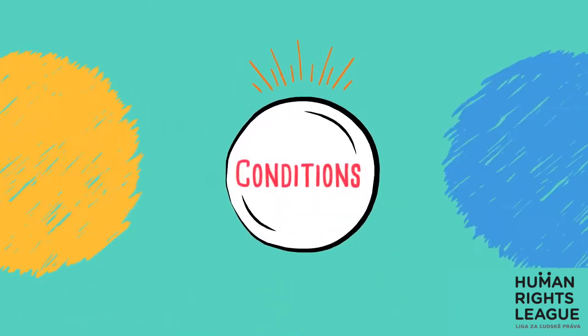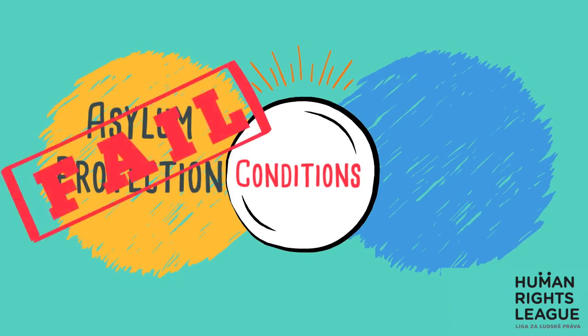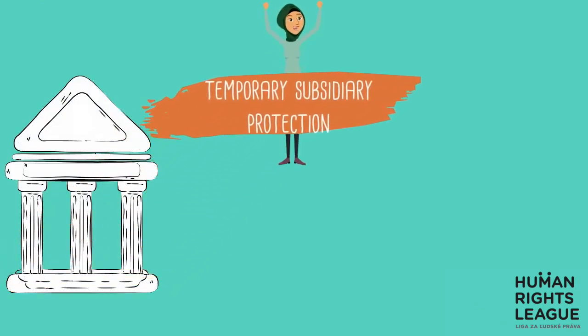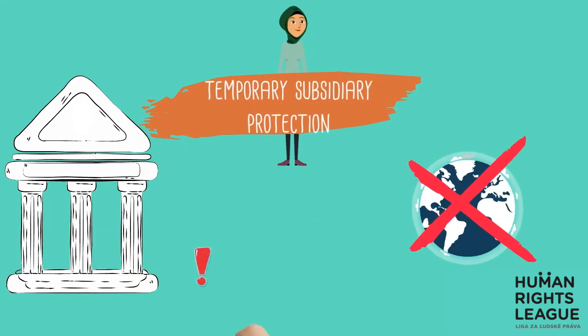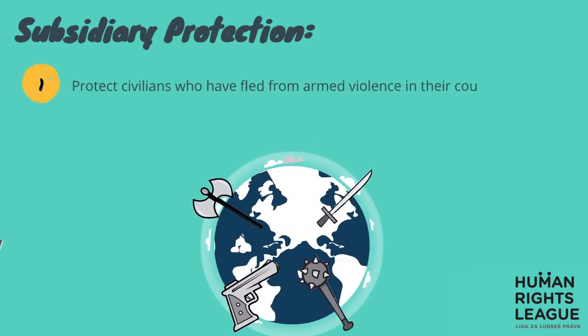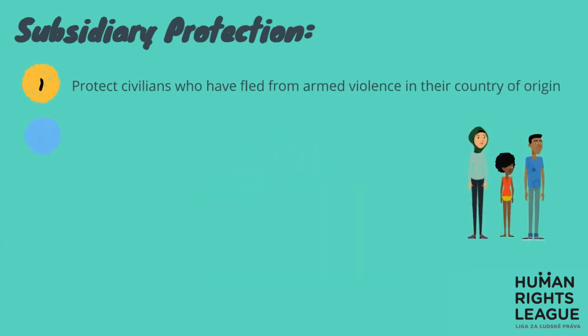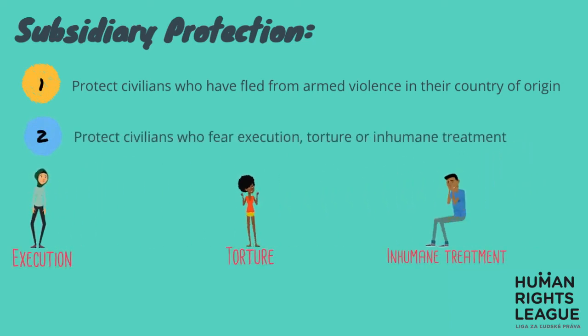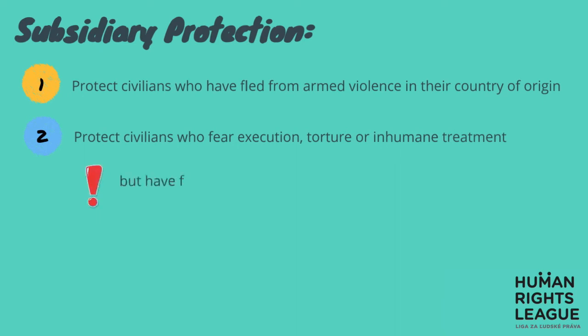However, if you fail to fulfill the conditions to be granted asylum protection, what about the conditions for granting subsidiary protection? In general, you may be granted temporary subsidiary protection if you cannot return to your country of origin because you are at risk of serious harm. Subsidiary protection, in principle, will protect civilians who have fled from armed violence in their country of origin. It may also be granted to those who fear execution, torture, or other inhumane treatment in their country of origin, but have failed to show any particular despicable reason required for granting asylum.